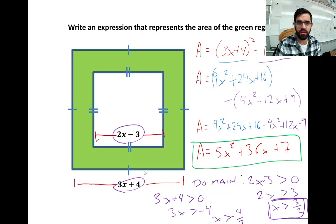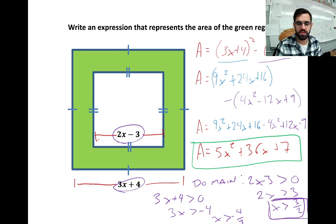Depending on how you interpret it, you might put an 'equals' under the greater-than sign. But for sure, a side length of a square must be positive. So 3x + 4, since it represents the side of a square, has to be a length greater than 0. If 3x + 4 > 0, we subtract 4 from each side and divide by 3, and we get x > -4/3.